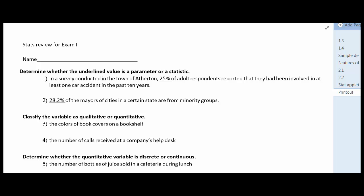Number one states, in a survey conducted in a town of Athernoton, 25% of adult respondents reported that they had been involved in at least one car accident over the past 10 years. So the question then becomes, what is so special about this number 25%? Does that 25% refer to the entire population or does it refer to a statistic?